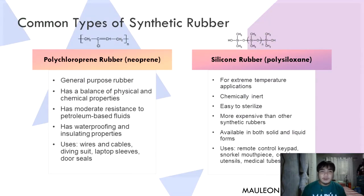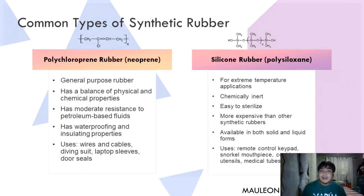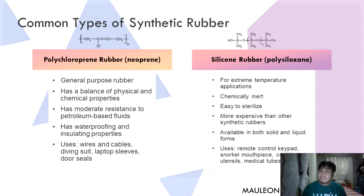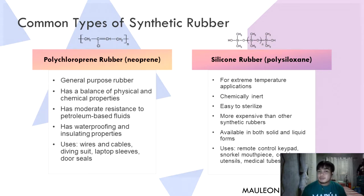Next is polychloroprene rubber, or neoprene. It is a general-purpose rubber with a balance of physical and chemical properties, moderate resistance to petroleum-based fluids, and waterproofing and insulating properties. It is commonly used in wires and cables, diving suits, laptop sleeves, and door seals.